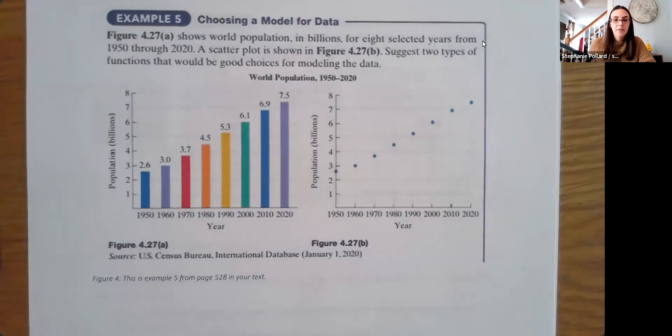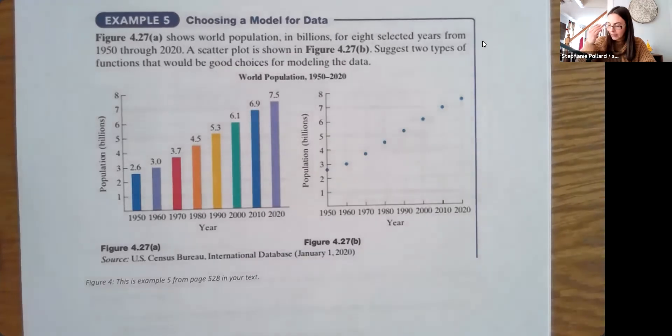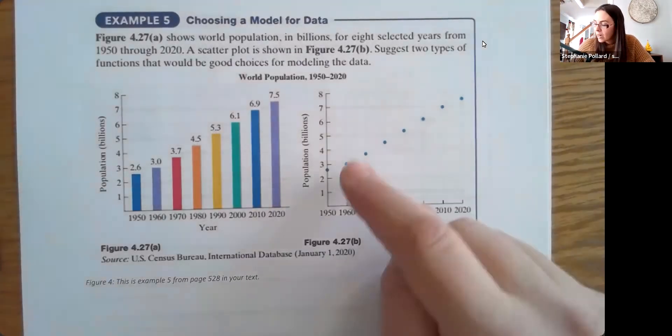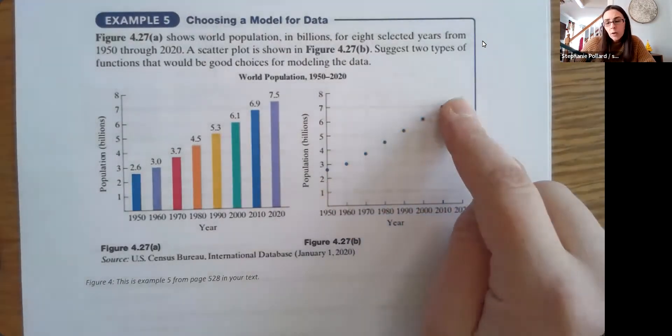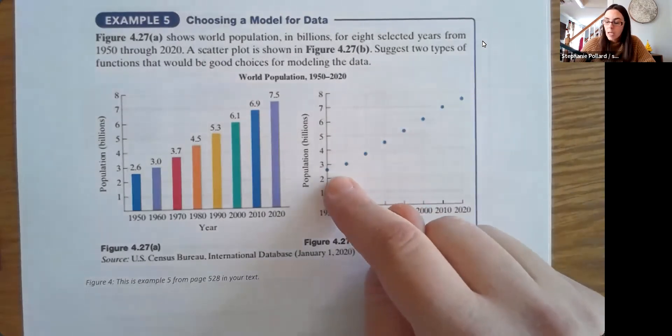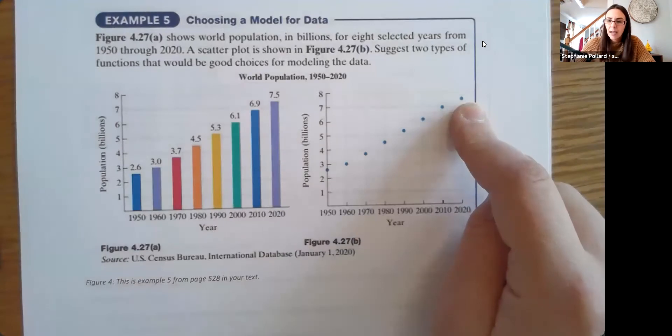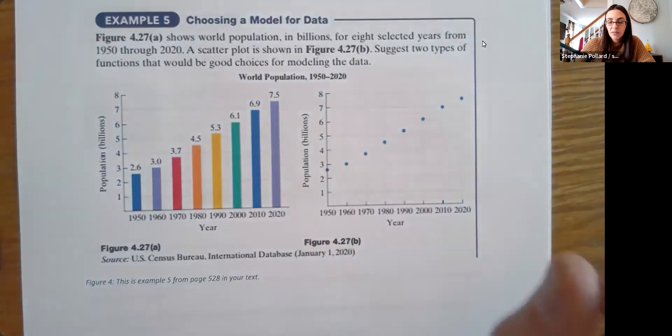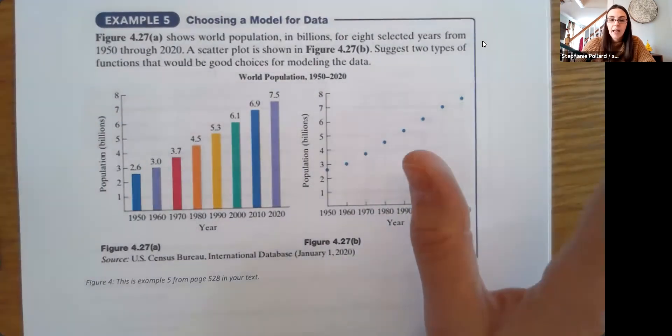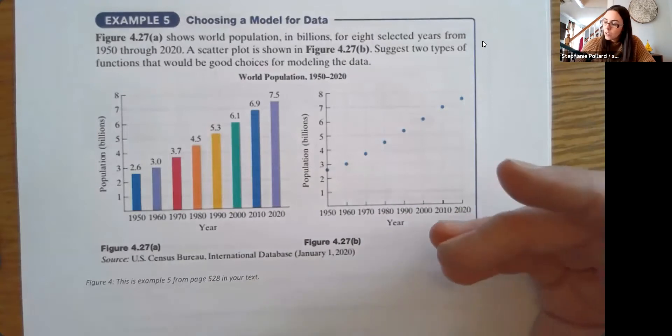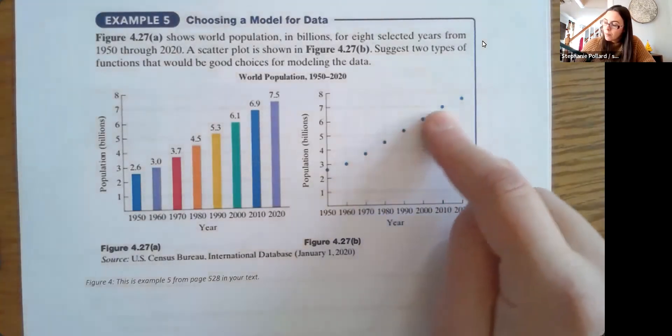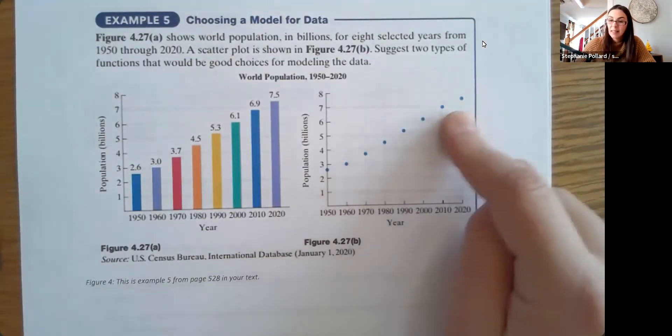So let's suggest two types of functions that would be good choices for modeling data. So if I look at my scatter point here, and you can pause the video and think about this at home, one thing I do notice is it does look like it's kind of in a straight line. It's not perfect, right? So remember that real world data is messy. It's never going to perfectly fit something, but you're looking for that kind of overall shape. So when I look at my scatter plot, one model that I'm thinking of would be a linear model.